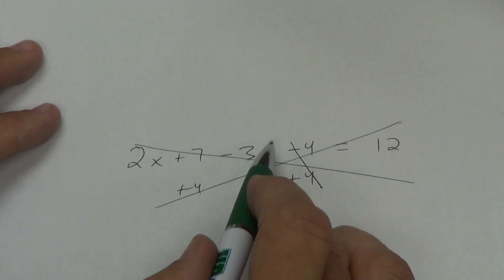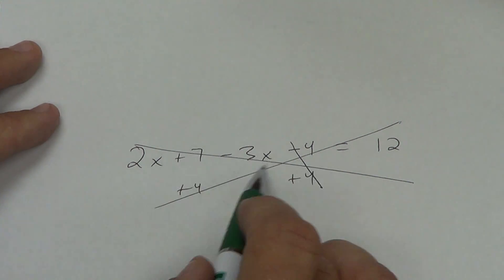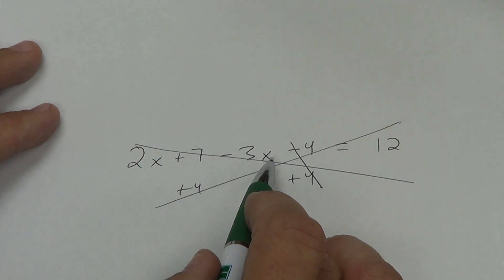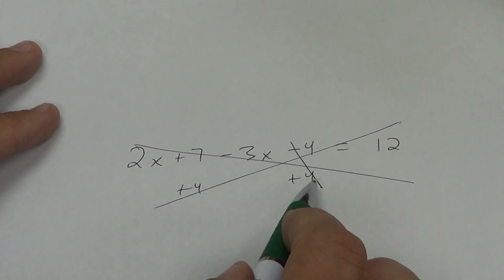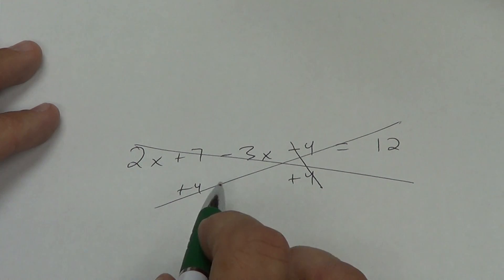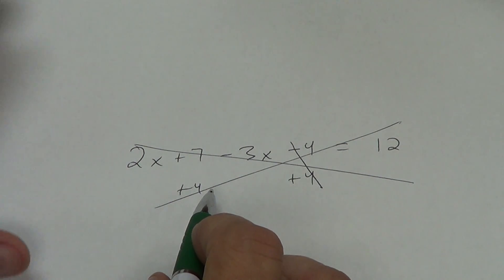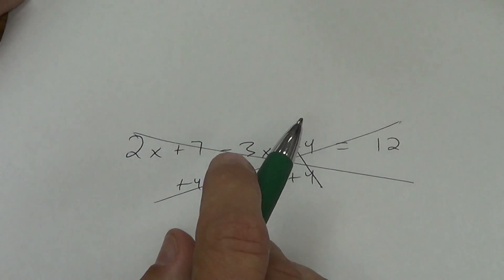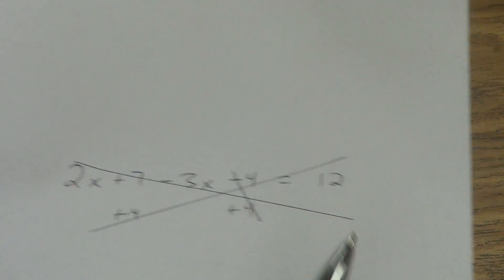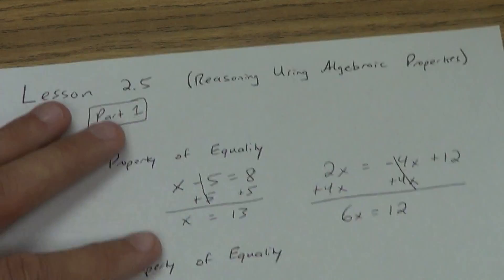In this case, you're going to want to combine your like terms first — it usually makes it easier. But don't add to the same side of the equal sign. Make sure you're always adding to the opposite side of the equal sign.